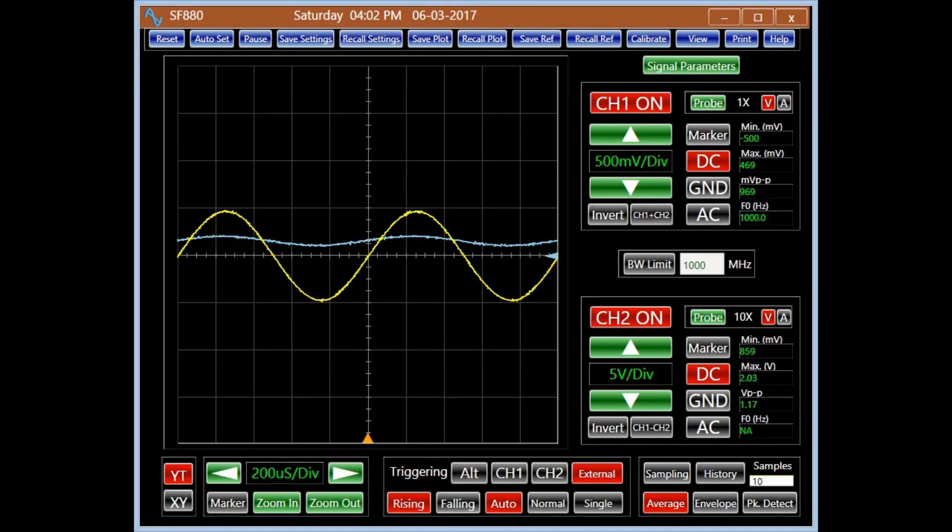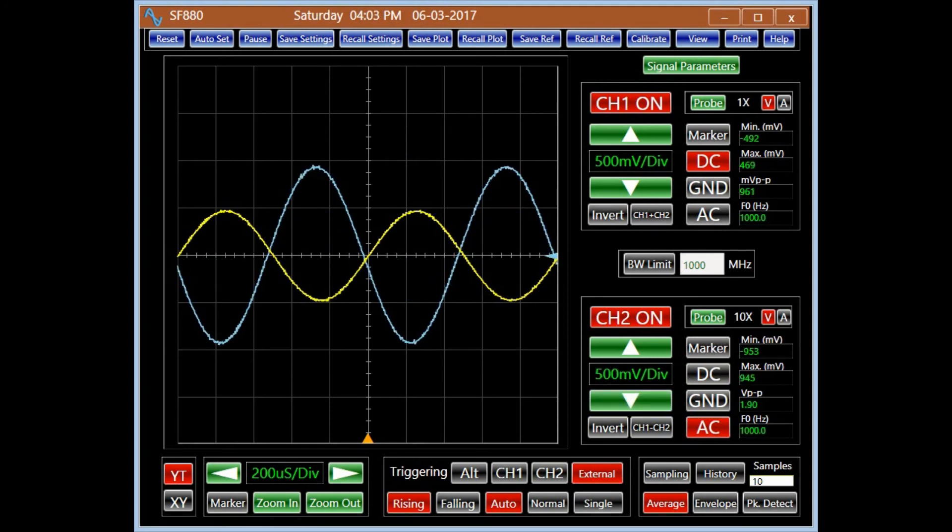Monitoring the input on channel 1 in yellow, we use channel 2 in blue to probe the base, emitter, and collector voltages. Switching to the AC mode and using similar voltage setting for both channels, we confirm the negative 2 amplification factor.